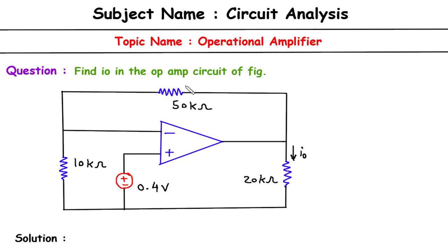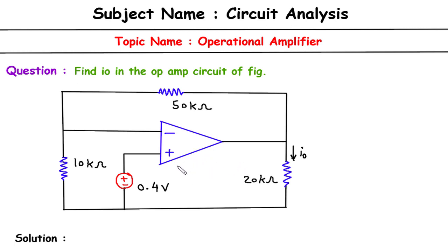First of all, we will make this circuit in our simulator app and then we will find I_O. Then we will solve this problem using circuit analysis. So first of all, we will draw this circuit in our simulator app.